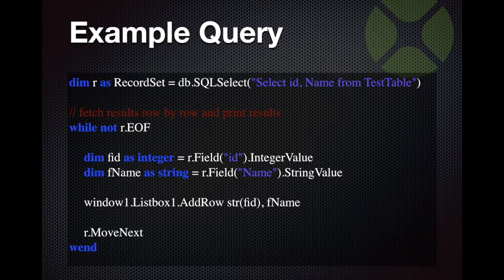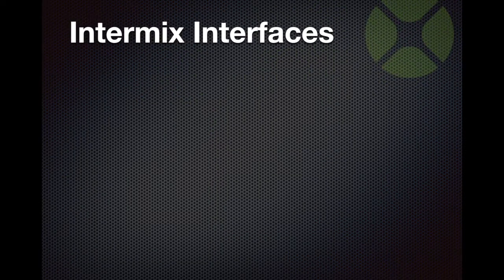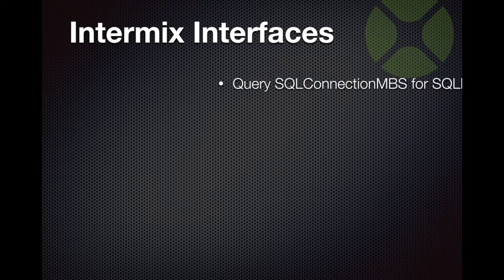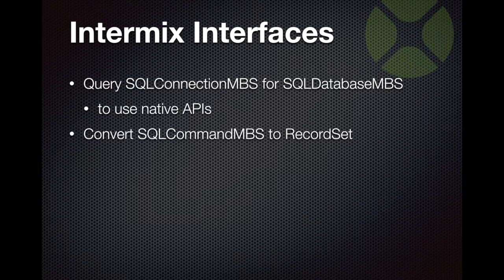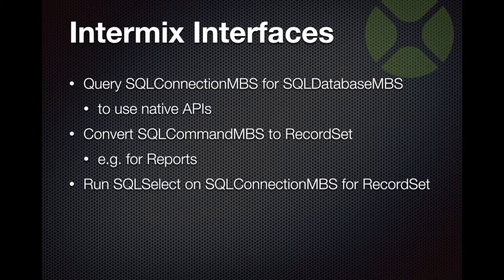Here is an example query with the SQL Database MBS class. We fetch rows until we reach end of file for the record set. Don't forget to call the moveNext method. If needed, you can mix both interfaces — so you can get the connection for the SQL Database class and access more methods, or get the record set for a SQL Command object and pass it to the Xojo Report Engine. You can also directly run SQLSelect and SQLExecute methods, which can return a record set.